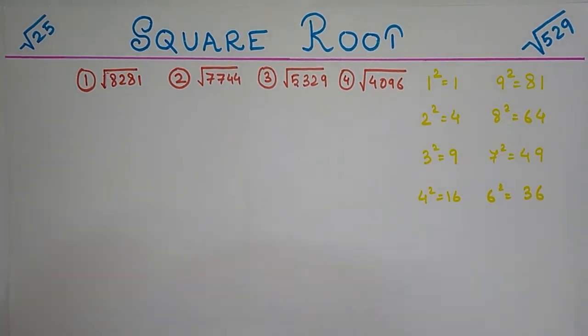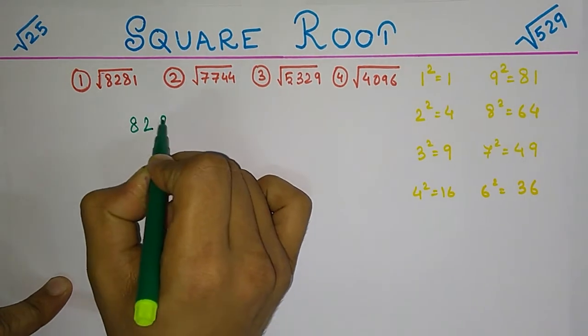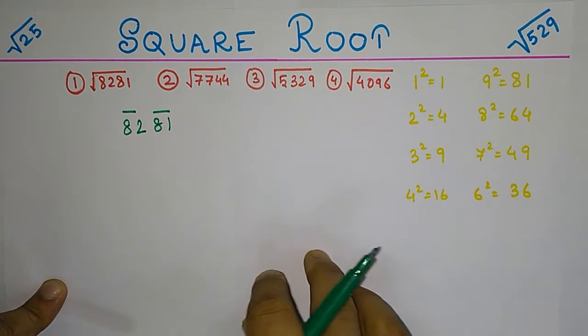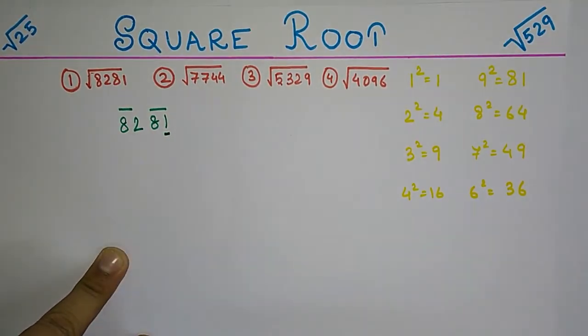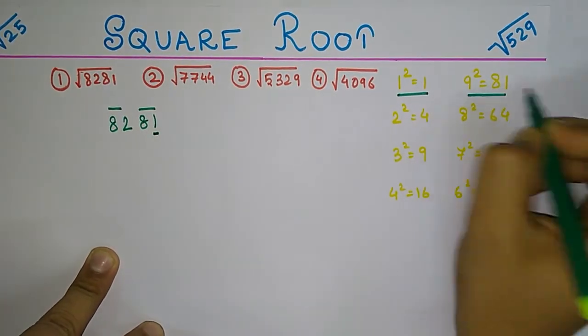So the algorithm goes like this: say you have a number 8281. Form pairs from the back, that is 81 and 82. Now you see the last digit is 1, so it may be from a number which ends in 1 or 9.